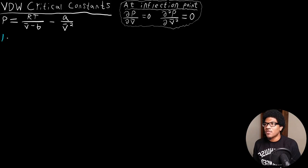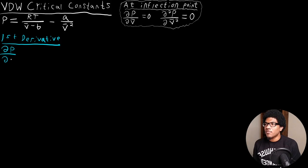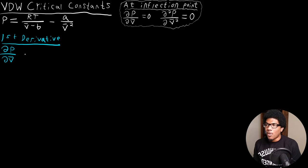In order to start this, we're going to take each derivative. So first, let's take the first derivative. We're going to take the first derivative of the Van der Waals equation pressure with respect to volume — specifically molar volume, v bar.